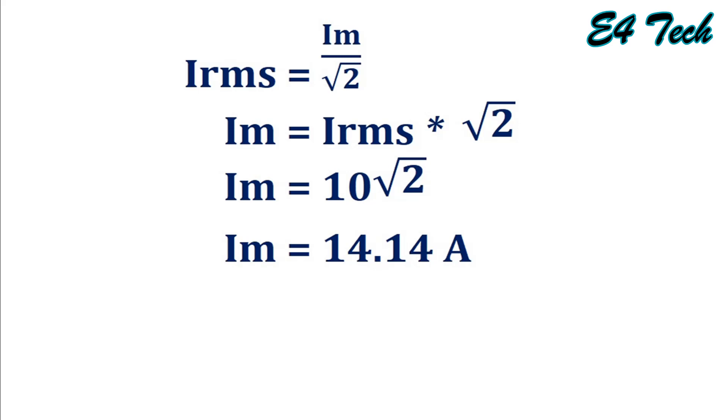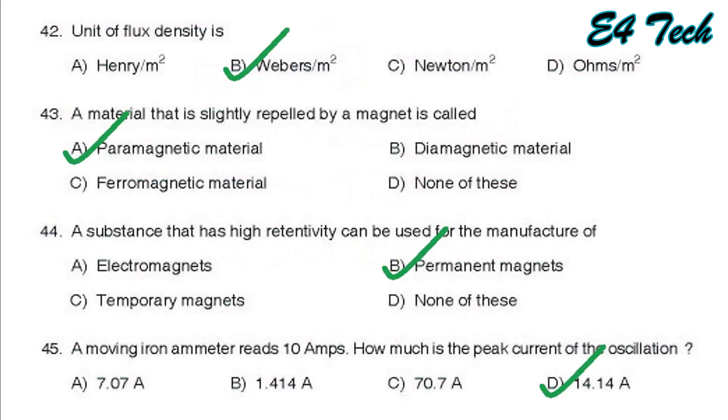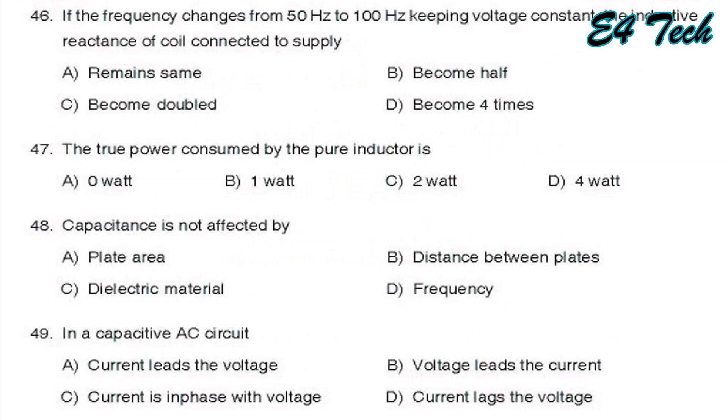Next, if the frequency changes from 50 hertz to 100 hertz keeping voltage constant, the inductive reactance of the coil connected to the supply. Inductive reactance XL is equal to omega L, 2 pi f L. If frequency doubles from 50 hertz to 100 hertz, inductive reactance will also become doubled. That is option C, become doubled.